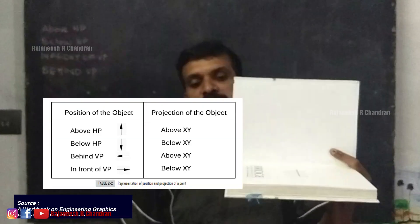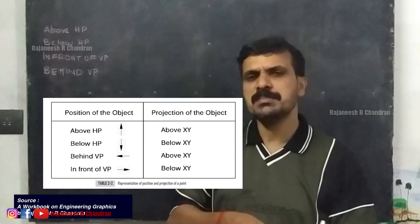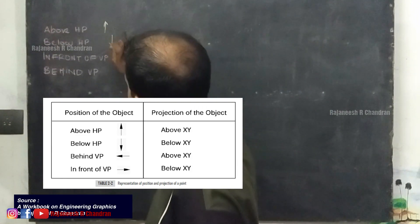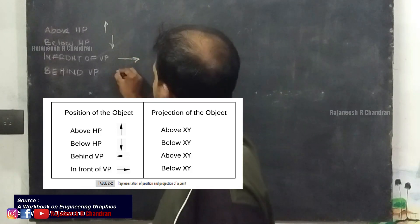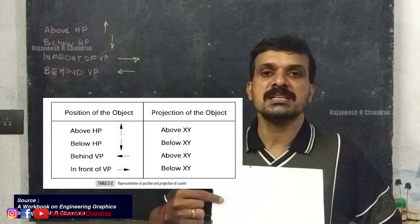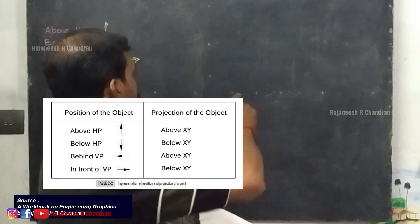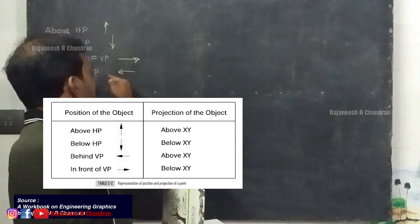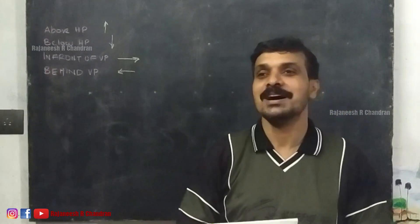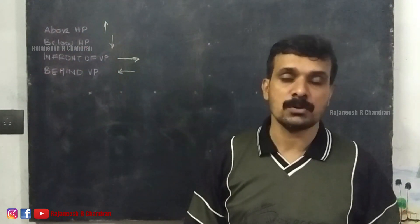The four different positions are: above HP, below HP, in front of VP, and behind VP. These can be easily represented using a directional arrow diagram. Above HP points upward, below HP points downward, in front of VP points forward, and behind VP points backward. This is the method of representation of points in space with respect to the principal planes — horizontal plane and vertical plane.